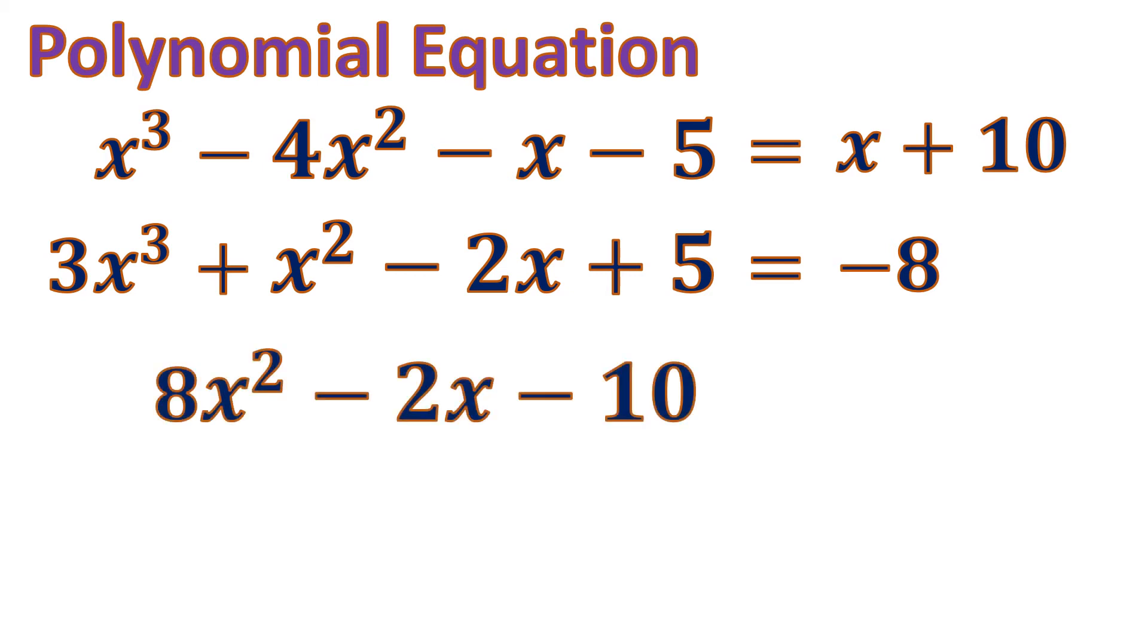Another example, we have 8x squared minus 2x minus 10 equals 0. So, in most cases, this is the looks of a polynomial equation that can be easier to solve for the known variable.